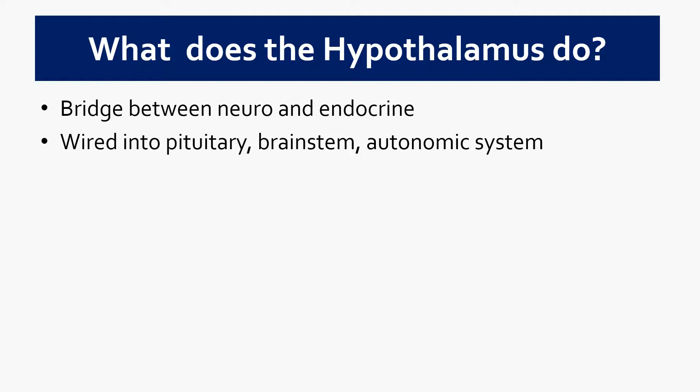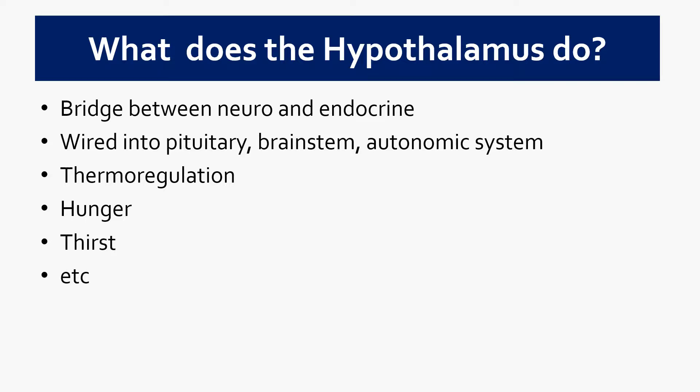The pituitary produces hormones in response to information from the hypothalamus, and those commands from the hypothalamus come from information sent by the amygdala, hippocampus, and other limbic regions. The hypothalamus is critically important for thermoregulation, hunger, thirst, and many other basic physiological states. It produces either the hormones themselves or the commands that cause other regions to produce the hormones and physiological changes that generate and respond to those states.